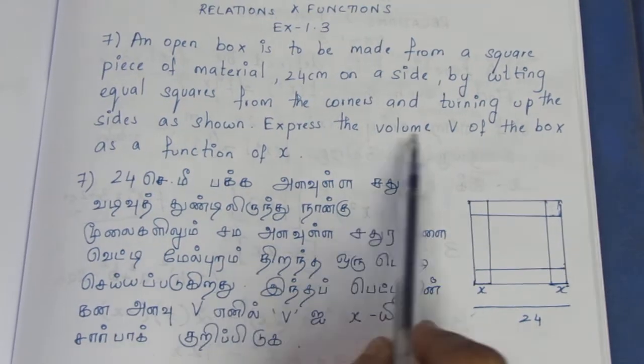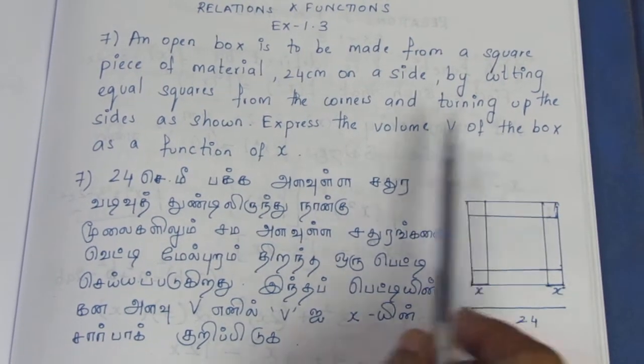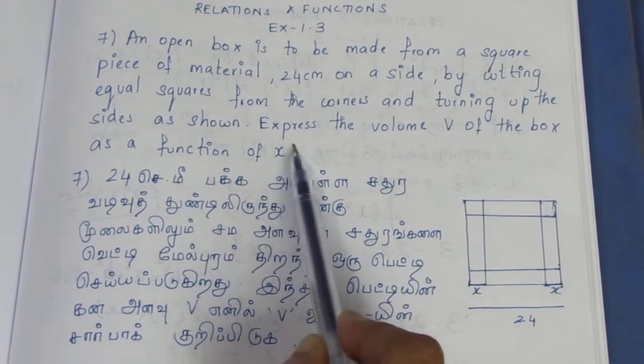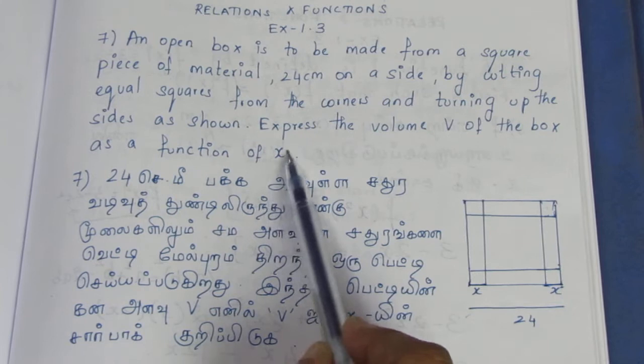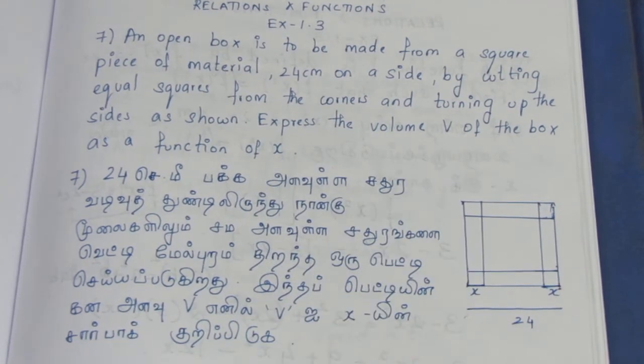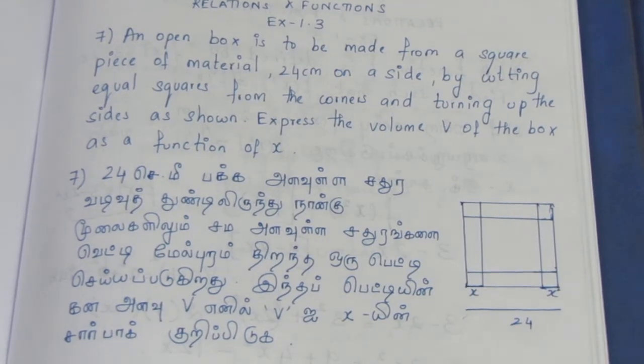Express the volume V of the box as a function of X. Function of X means X is the variable. Volume is what we call V.